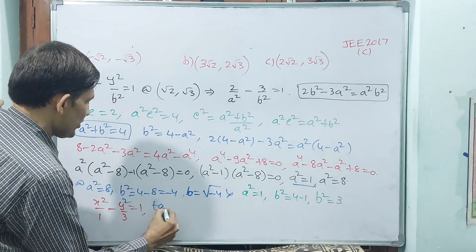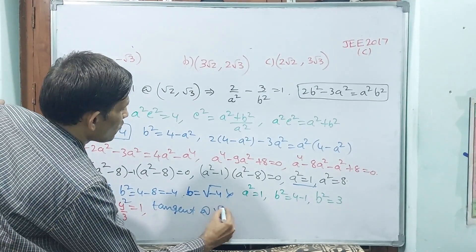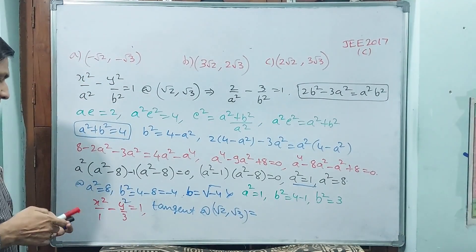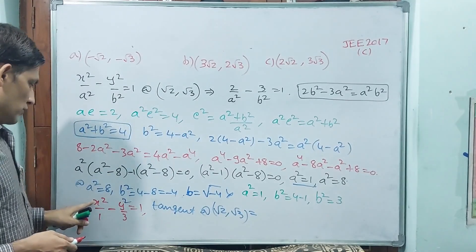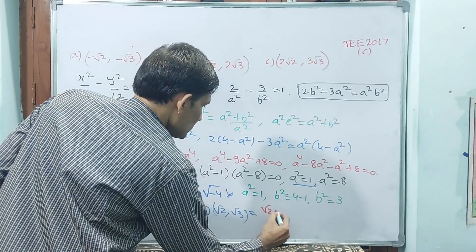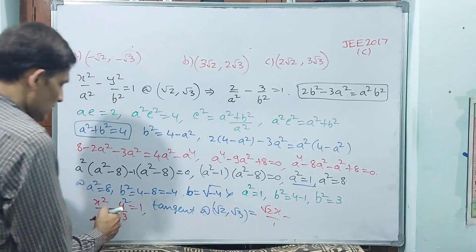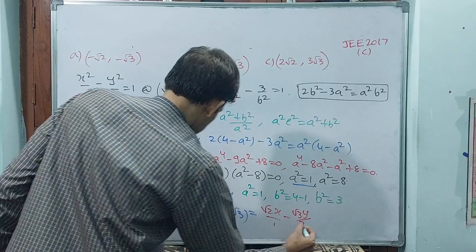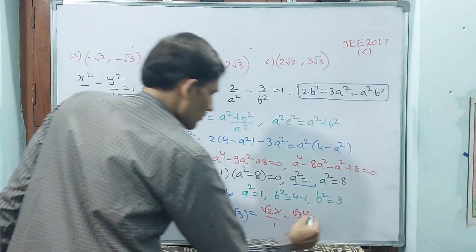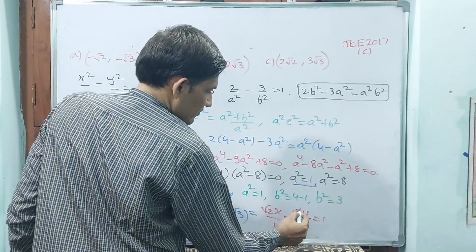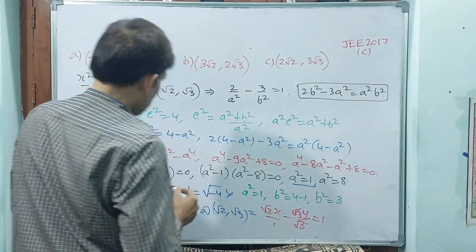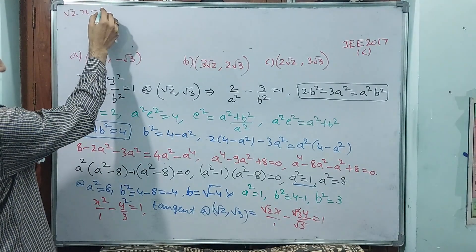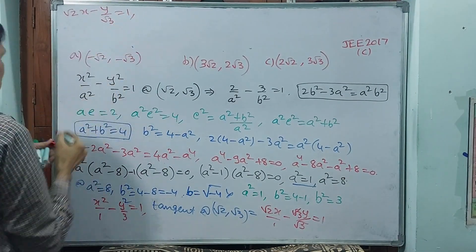Write down the tangent at (root 2, root 3). The tangent equation is: root 2 times x divided by 1, minus root 3 times y divided by 3, equals 1. Simplifying: root 2 times x minus y by root 3 equals 1.